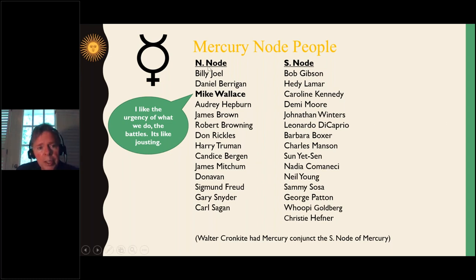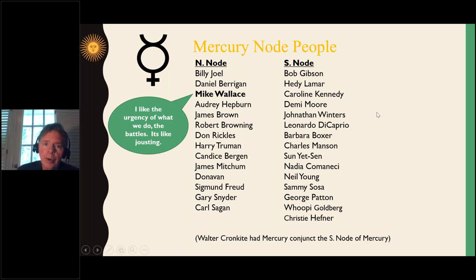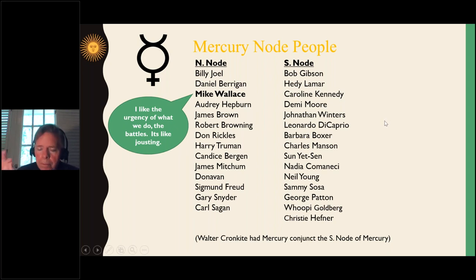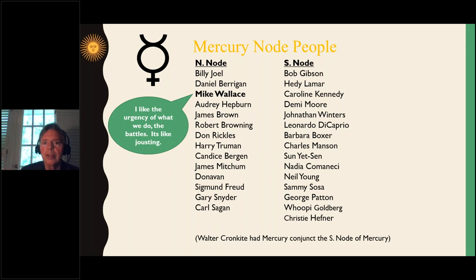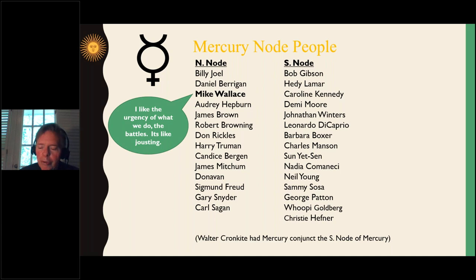If we're talking about Mercury, think about all the things associated with it: writing, communication, cleverness, quickness, someone known for their ideas and intellect. Because the Mercury nodes are so close to Mars, you're going to get a crossover with many examples. A lot of the people listed for Mercury are also listed for Mars, and you'll see this when we look at Mars as well.